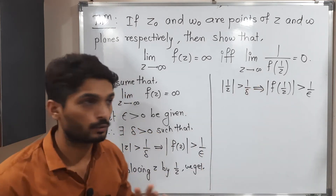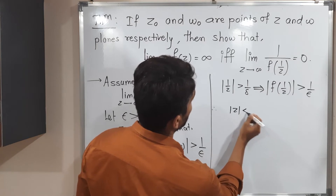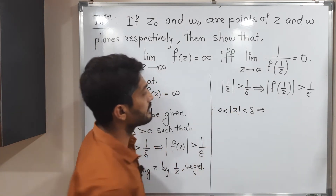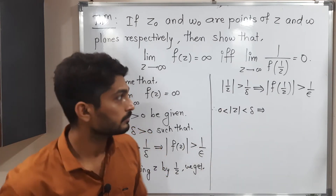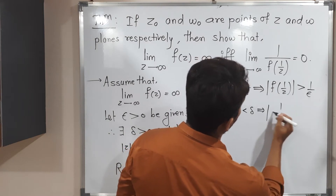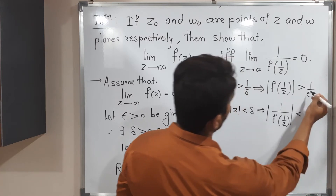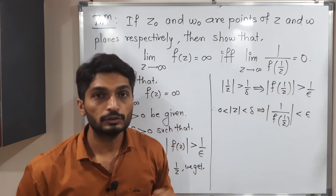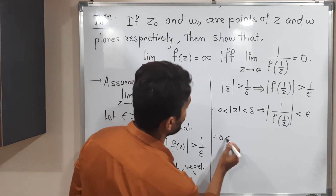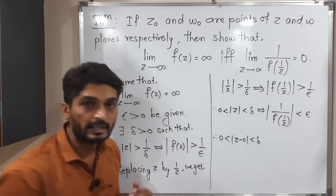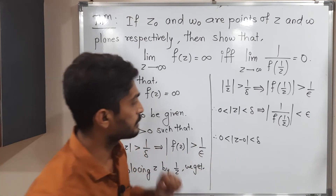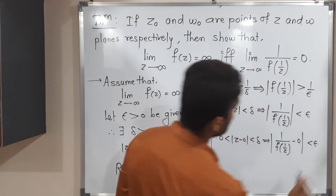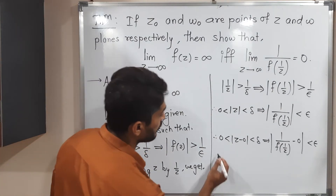But we want 1/f(1/z) here. So I will take the reciprocal of both sides. Therefore mod z less than delta — taking reciprocal changes the inequality. Since the expression is greater than zero, the denominator is nonzero. On the other side, taking reciprocal gives 1/f(1/z) less than epsilon, with the inequality reversed. Then a small adjustment: 0 less than mod(z − 0) less than delta, and 1/f(1/z) − 0 less than epsilon.